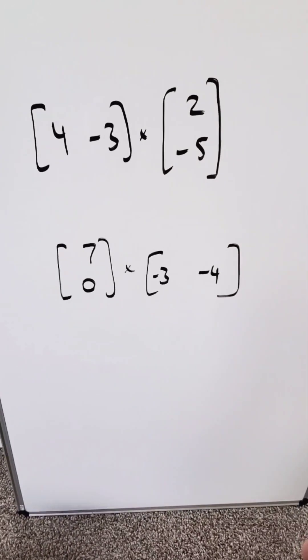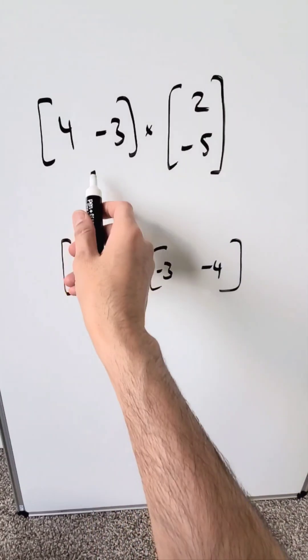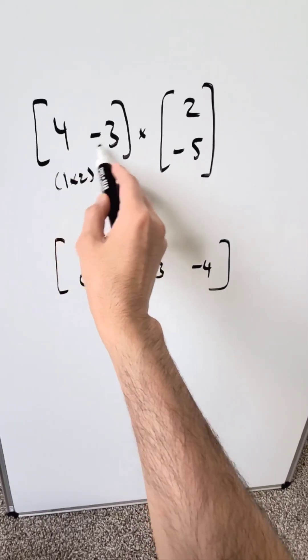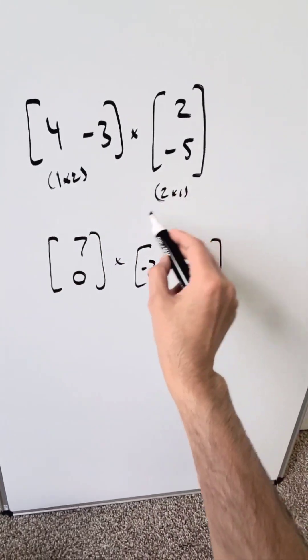Let's look here at two instances of matrix multiplication, starting here at the top. We have over here a 1 by 2 matrix, 1 row, 2 columns. Here we have a 2 by 1, 2 rows, 1 column.